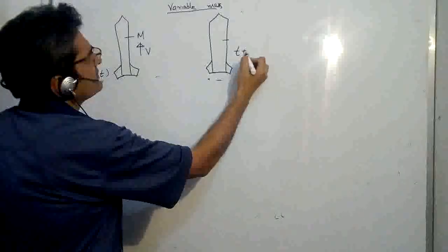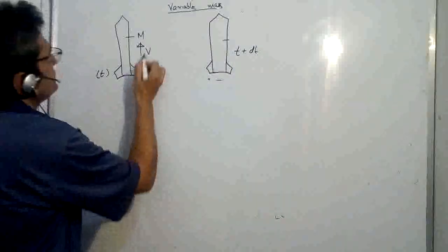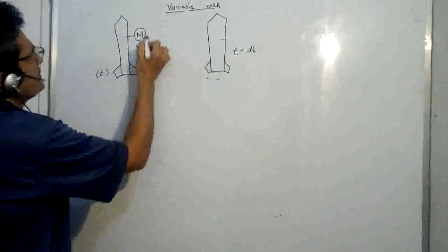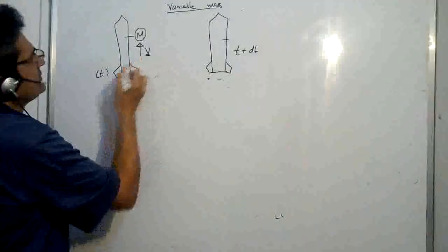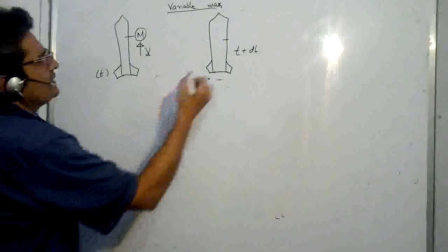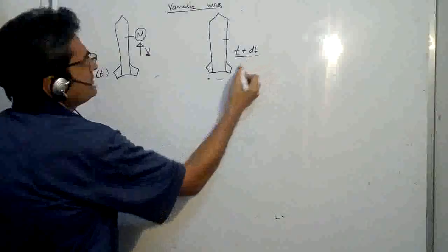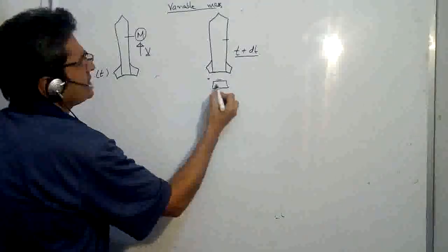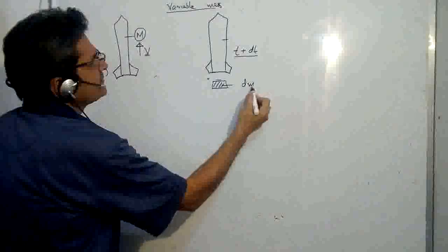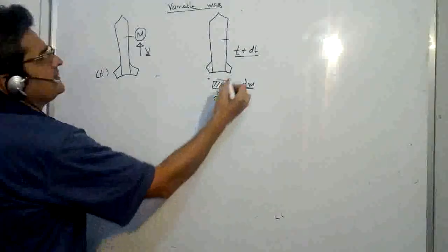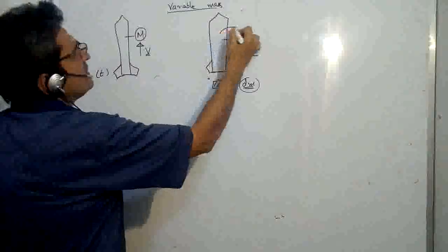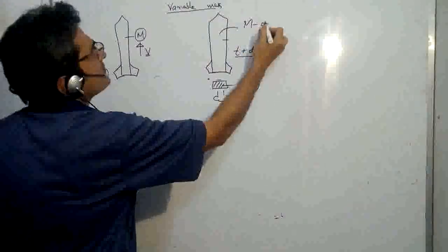So initially at time t, mass of rocket be m and let the velocity be v. And at t plus dt, let a small exhaust which is small dm - please note it is small dm - has come out. Since this small dm has come out, the mass of rocket will be m minus small dm.